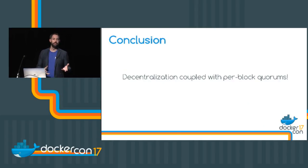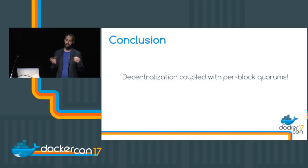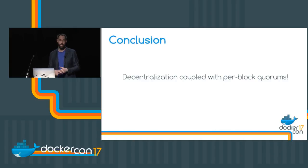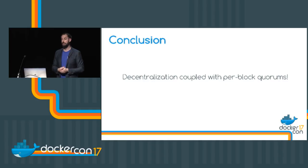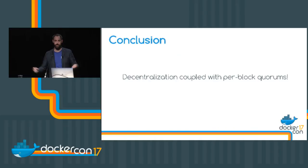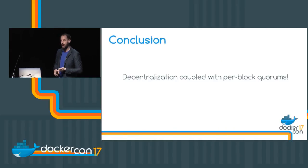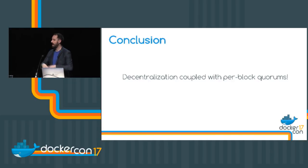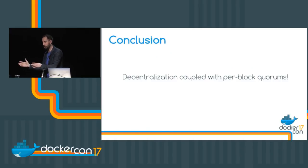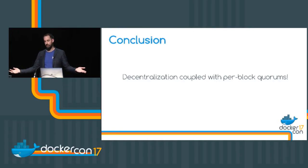To summarize the differentiation between Infinite's key value store and other distributed systems: decentralization means it goes faster due to natural distribution, it is more secure because there's no single point to attack, and it is more resilient because you cannot overflow the system. When you couple that with per-block quorums, you have something that scales to millions of nodes.